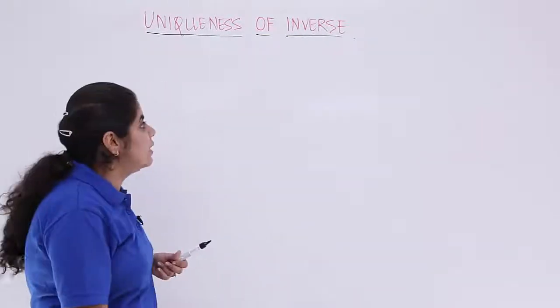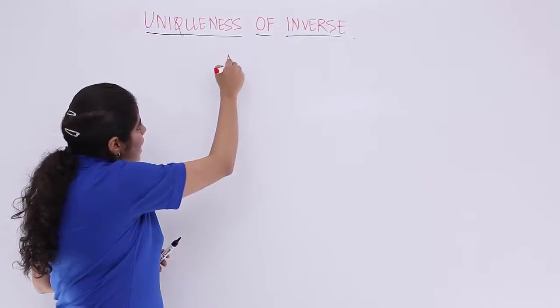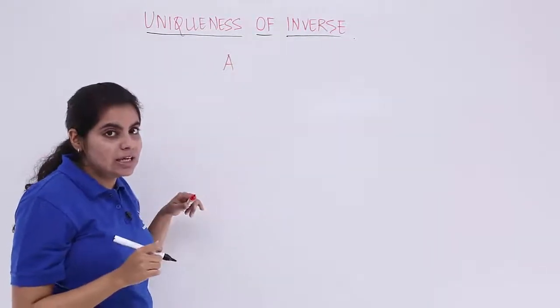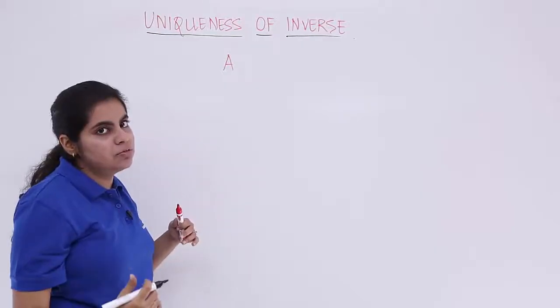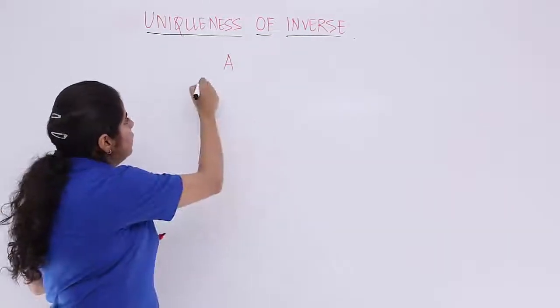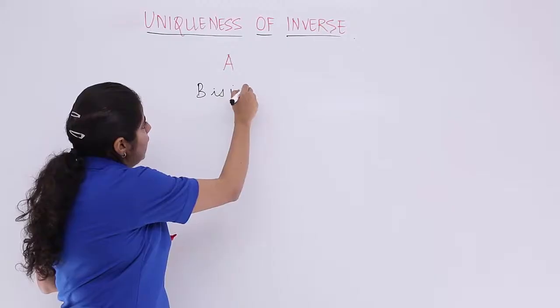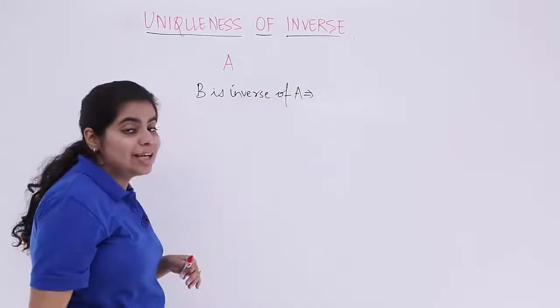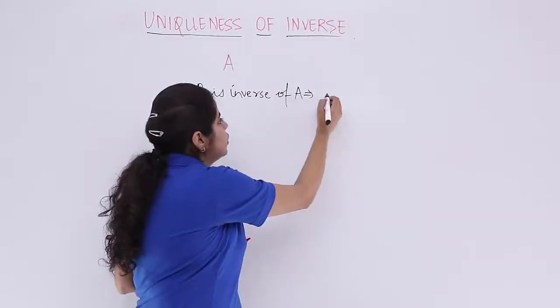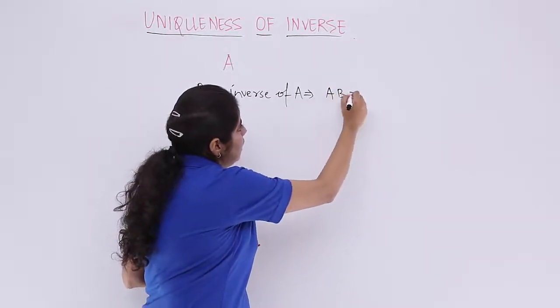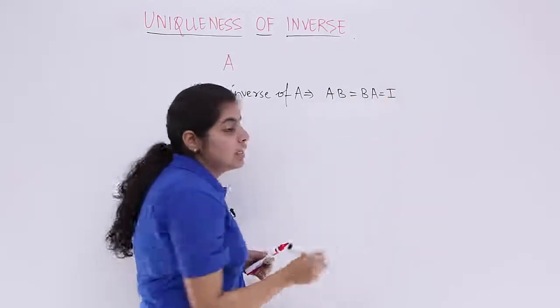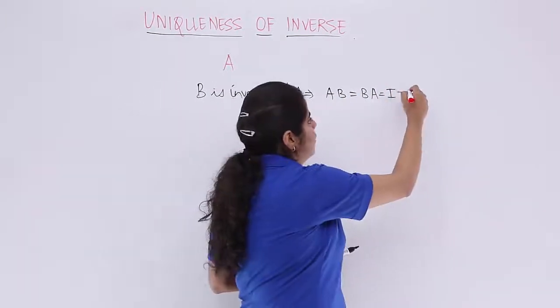We have a matrix A and according to the theoretical illustration I'll be taking that B is the inverse of A. If B is inverse of A, then I know that from the previous video I have AB equal to BA is equal to I, and this is my equation number one.